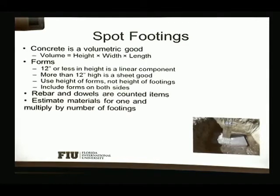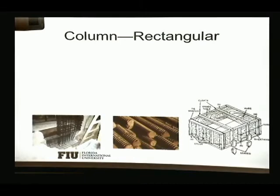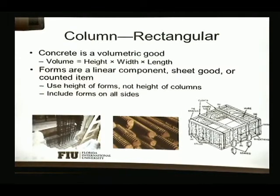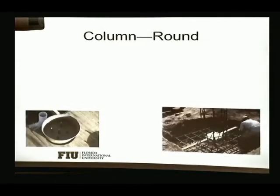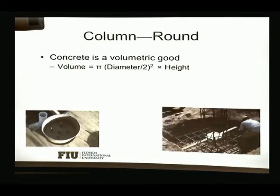Pictures show rebar configurations in spot footings and complex reinforcing in concrete columns. The volume is easy to calculate; forms are measured in square feet; rebars and ties are counted and weighed. For round columns the volume formula is π × (d/2)² × height, which gives you the concrete volume for a circular column.